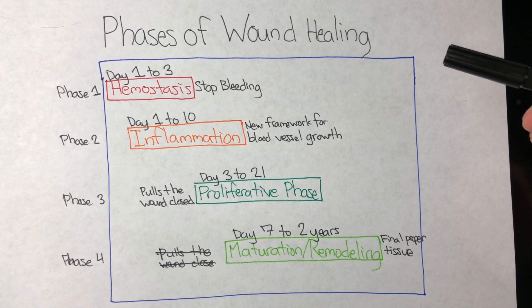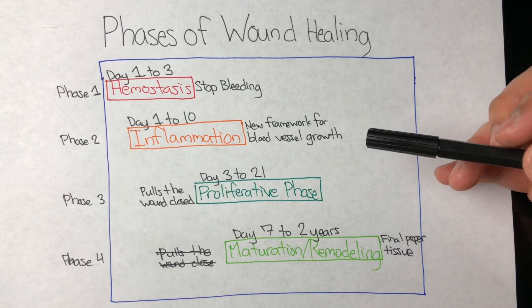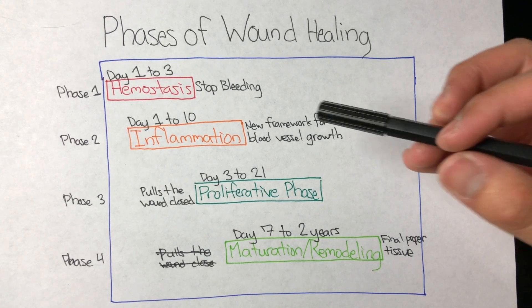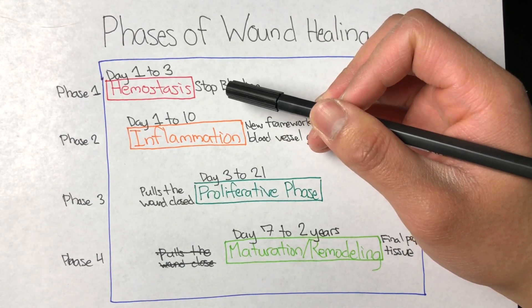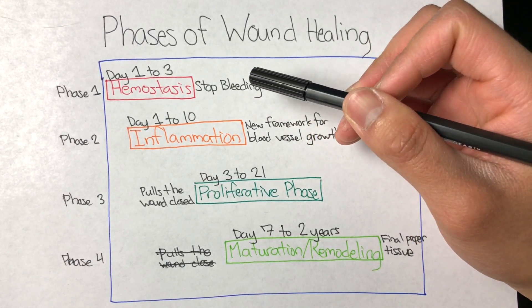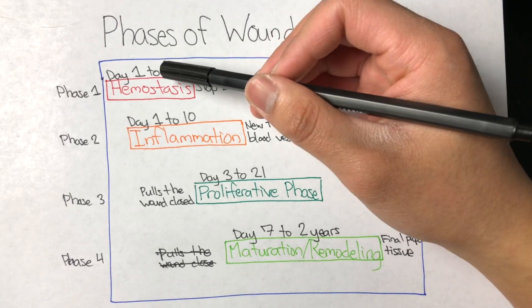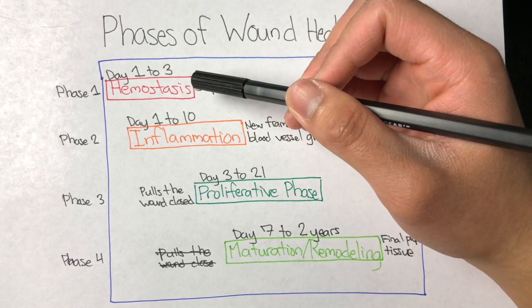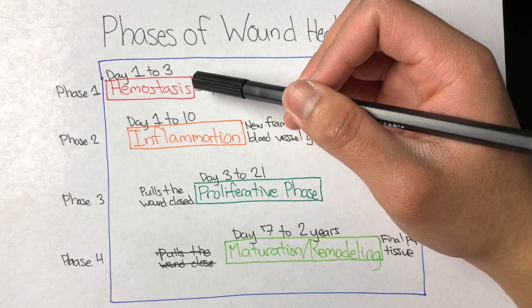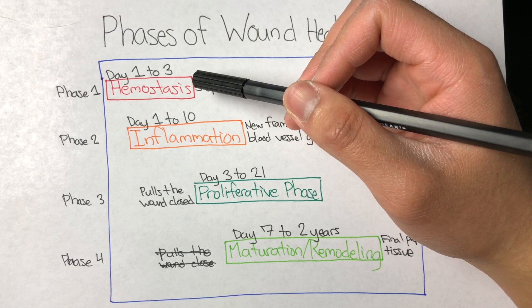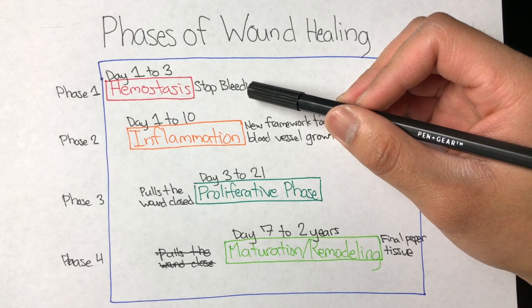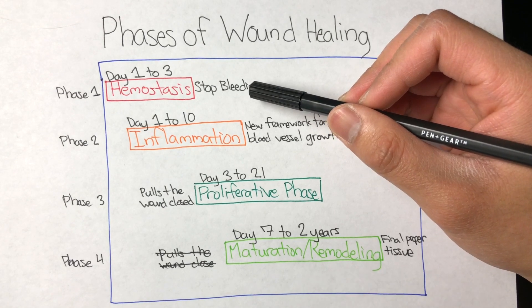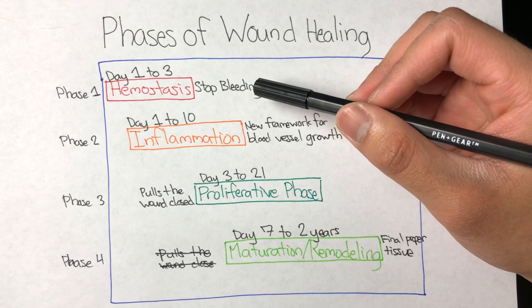The first phase of normal wound healing is the hemostasis phase, and it essentially lasts from day one to day three. The goals for that phase are to stop bleeding and to form a clot.